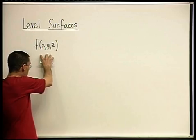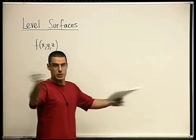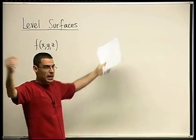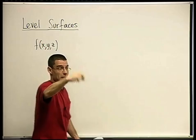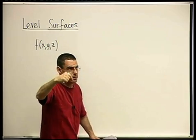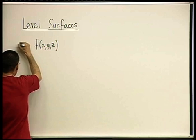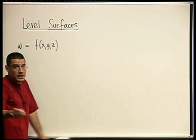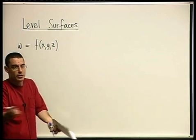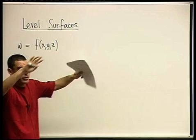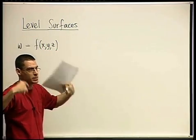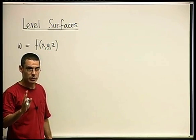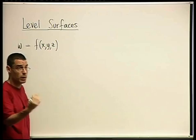Why? Because in order to draw this, the domain is three-dimensional. The domain is three-space where we live, and the value at any point in three-space should be in some fourth dimension. So this is something of the form w equals f of x, y, z. Do you agree? And we can't draw that.